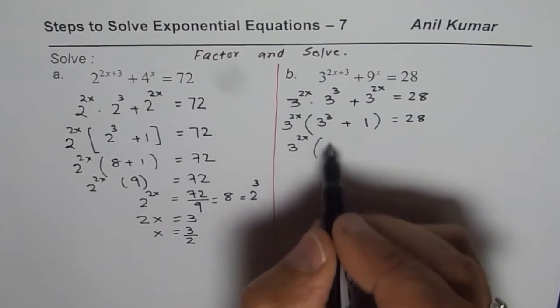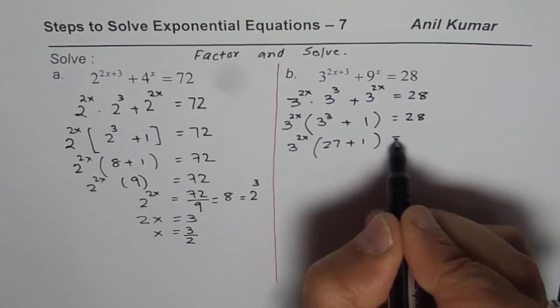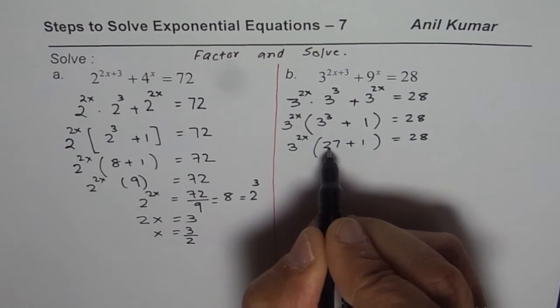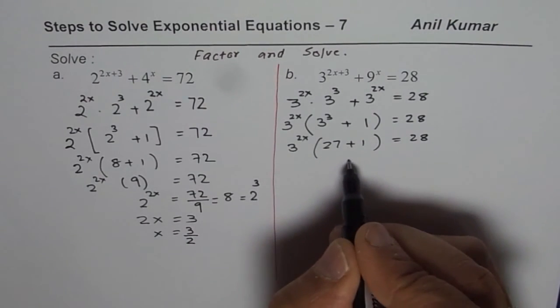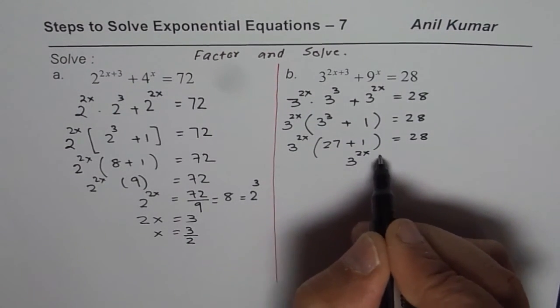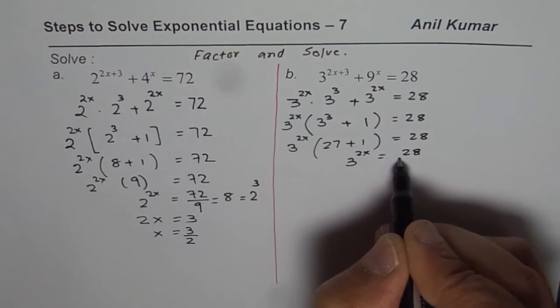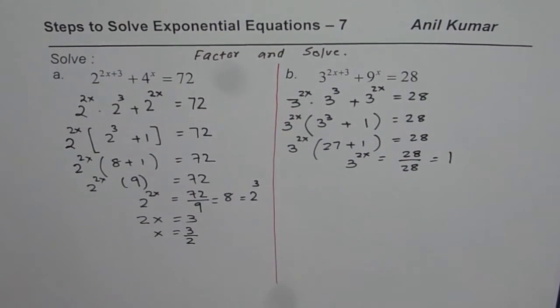Now we have 3 to the power of 2x equals 28 divided by 28 which is 1.